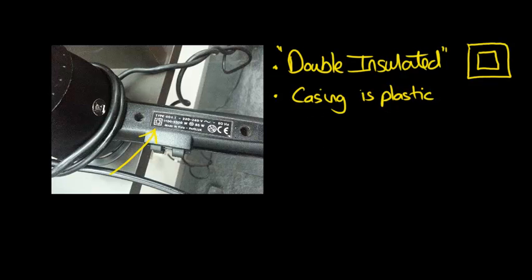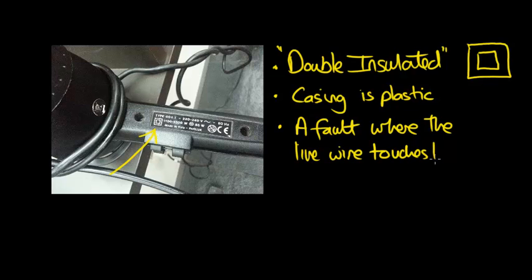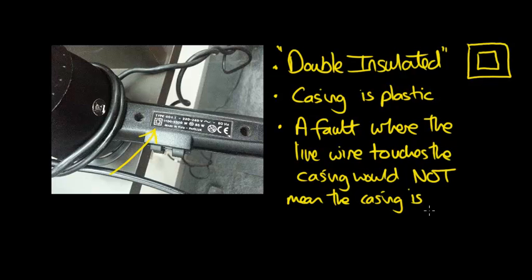And so this means that if for some reason there was a fault and let's say the live wire of the supply were to touch the casing, because the casing is plastic it would not become electrified. So we can say that a fault where the live wire short circuits or touches the casing would not mean the casing is electrified.